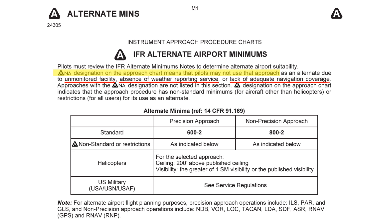If an ILS approach is unmonitored, and thus it's possible it may not be working when you shoot the approach, you're free to still try. After all, there'll be no NOTAM saying you can't. But when you're relying on the approach as your alternate, the margin for error is slimmer, so using this approach isn't allowed in planning. Be careful not to interpret ANA as meaning we can't use this airport as an alternate — it's just that this approach can't be used as part of the planning.